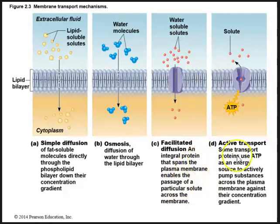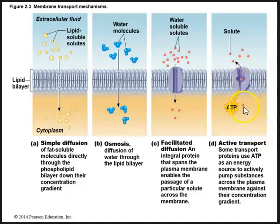Then we have active transport. As its name implies, active transport requires energy. Integral proteins move molecules across the plasma membrane against their concentration gradient — instead of going from high to low, it goes from low concentration to high concentration. This requires energy. So active transport uses ATP as an energy source to actively pump substances across the plasma membrane against their concentration gradient.